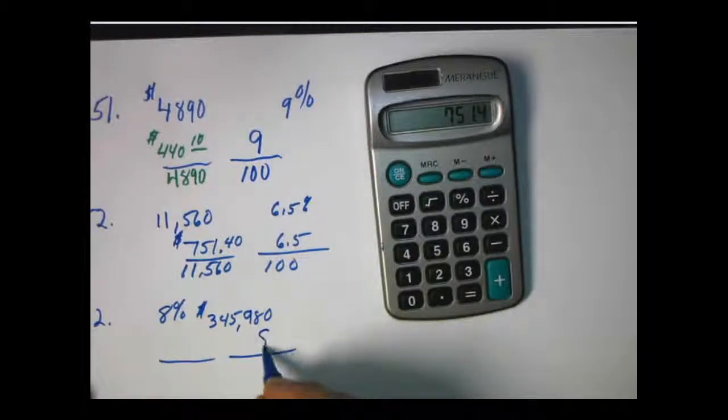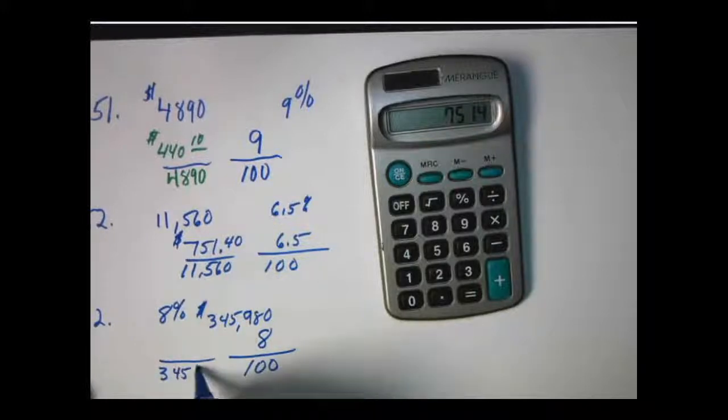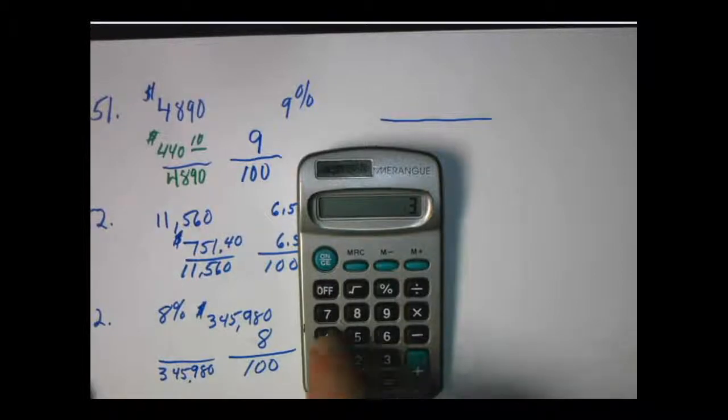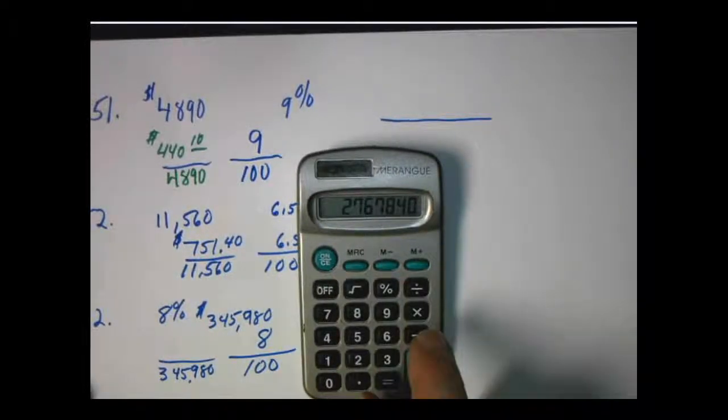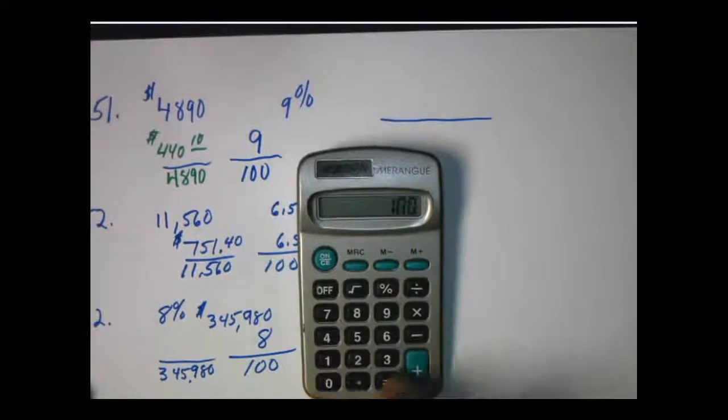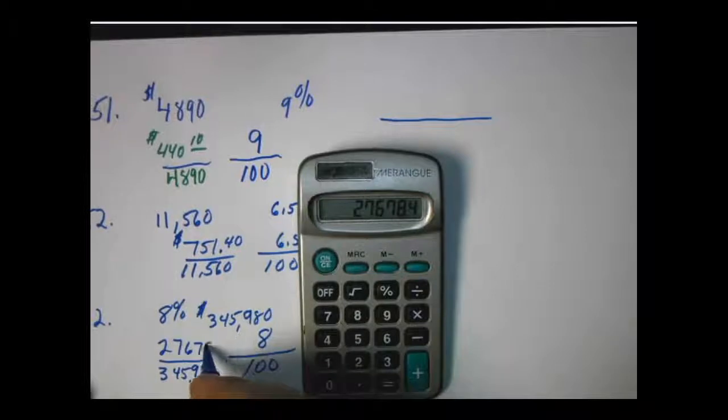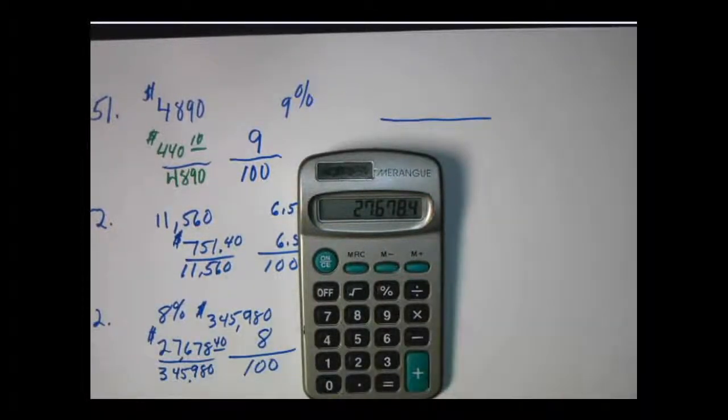Well, percent is always going to go over that 100. That's the total. So we're going to take 345,980 times 8 equals divided by 100. So $27,678.40. Well, that's a pretty good monthly salary. $27,678.40.